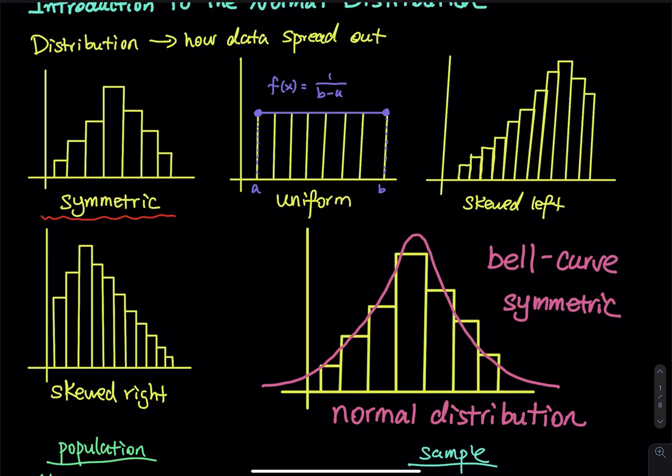Before we go into more detail, what is the meaning of normal? In plain English, normal means everything runs okay — everything looks fine and good. This is just how it is.